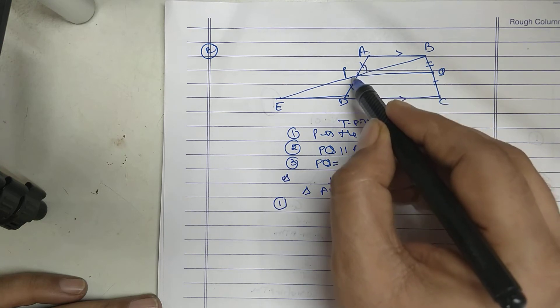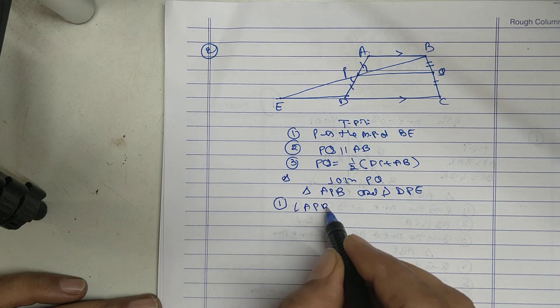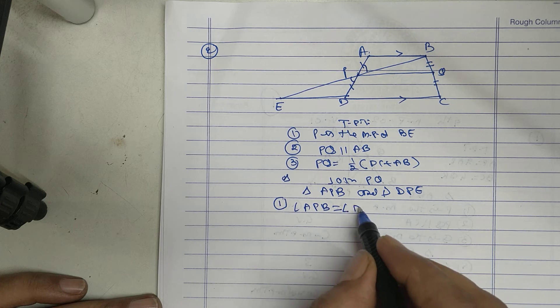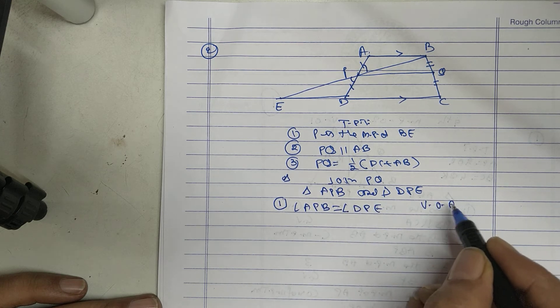Angle ABP equal to angle DPE. Vertically opposite angles.